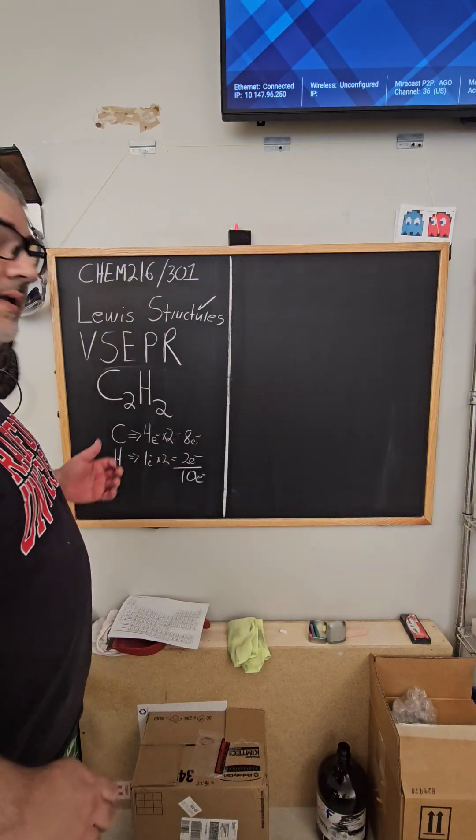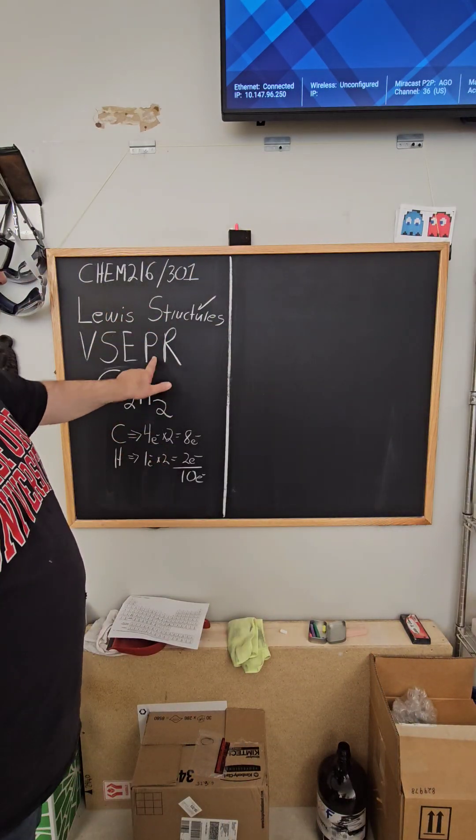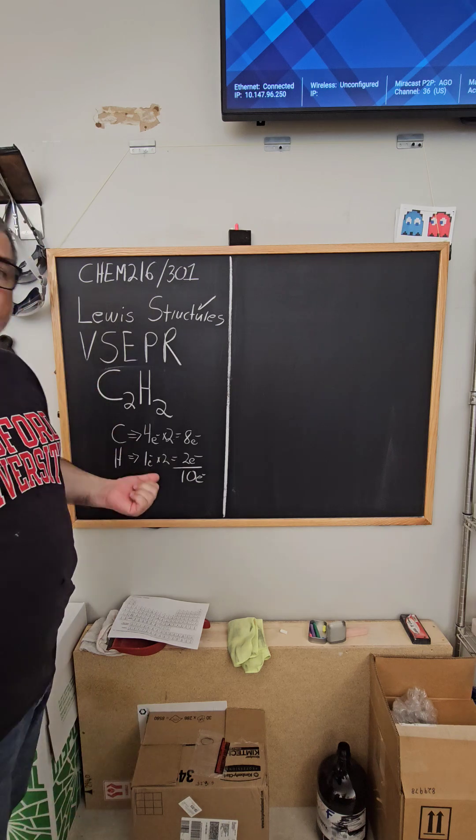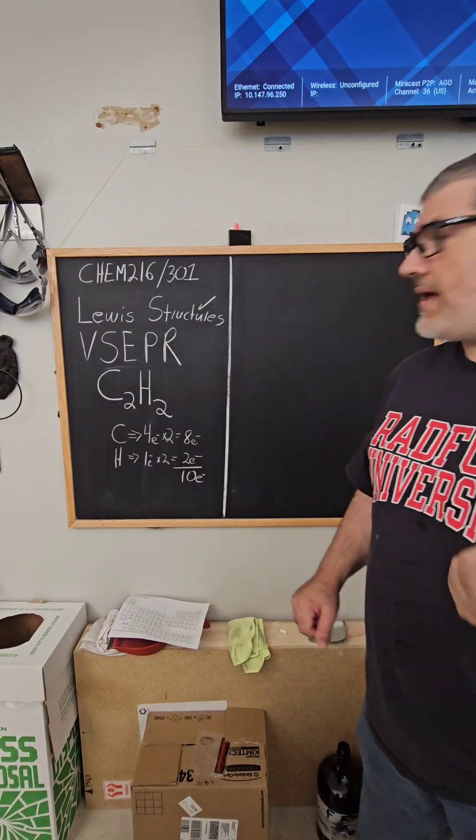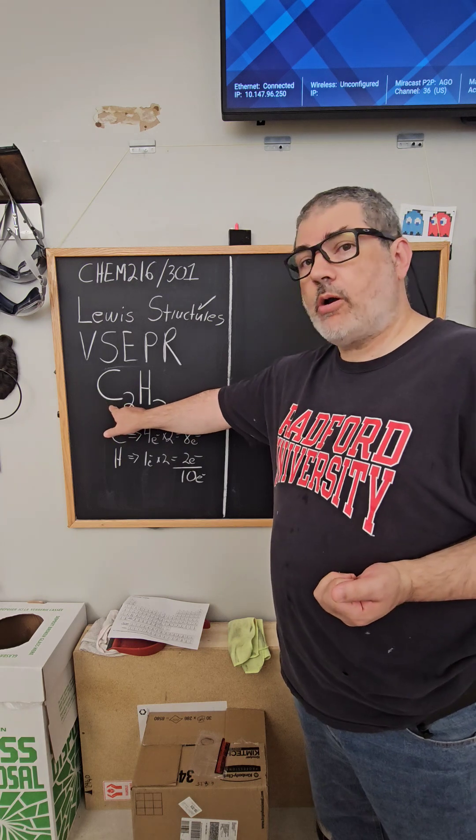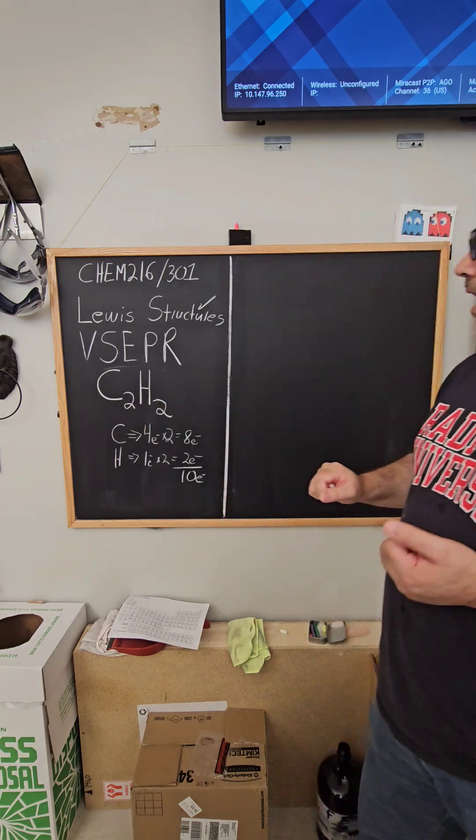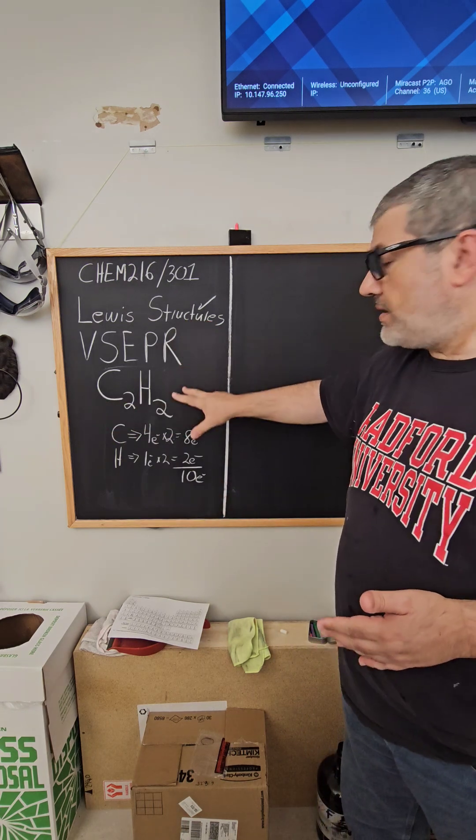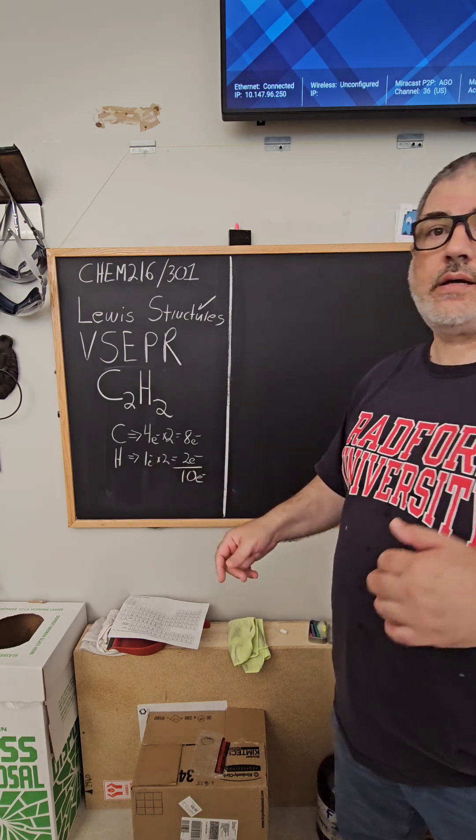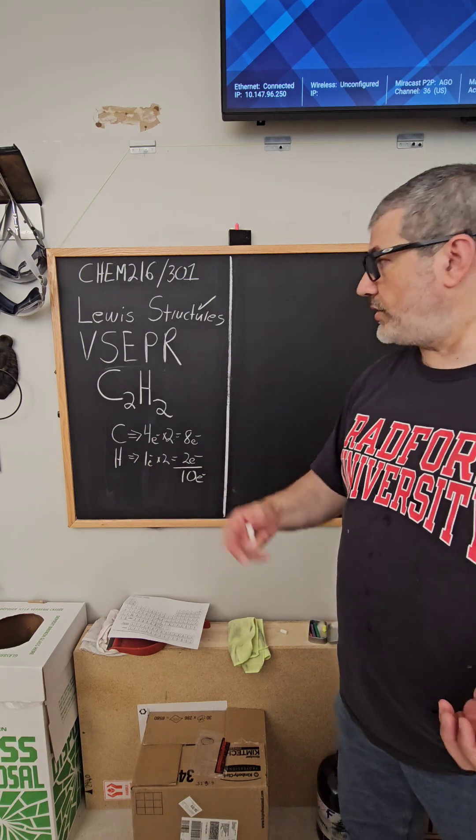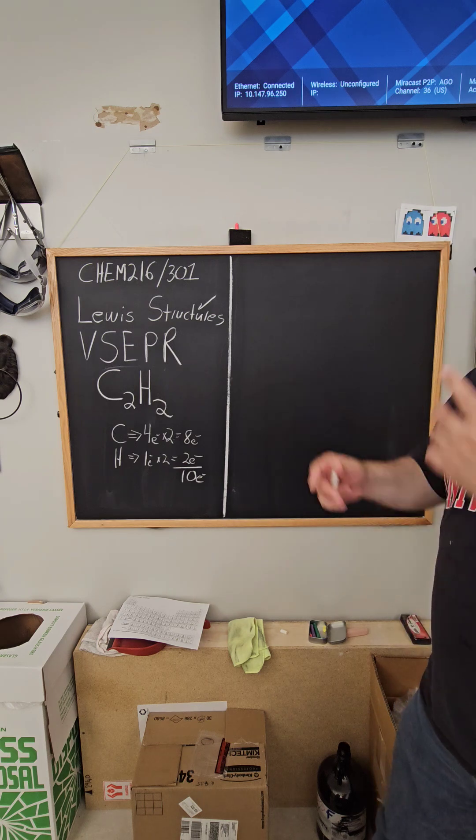All right, I'm going to work through another Lewis dot structure, VSEPR structure. In this case, it's an organic molecule, and what I mean by that is it's a molecule that contains carbon and hydrogen. But Lewis dot structures apply to them just as well as they would to an inorganic molecule, something like sulfur dioxide, which doesn't have carbon or hydrogen for that matter.